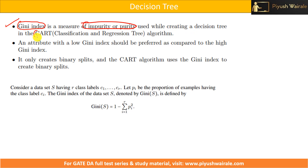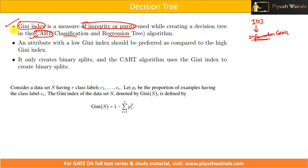It is used in the CART algorithm — Classification and Regression Tree. In the case of the ID3 algorithm, we measure impurity based on information gain. But in the case of the CART algorithm, we measure impurity or purity based on the Gini Index. So remember this point: Gini Index is mostly associated with the CART algorithm.